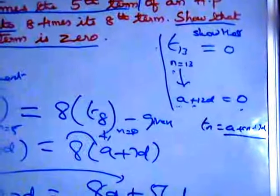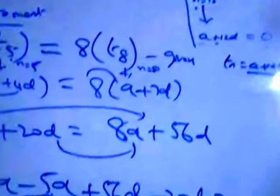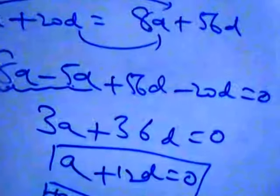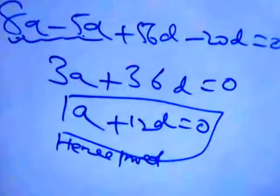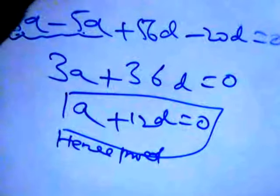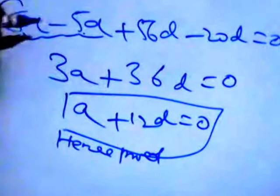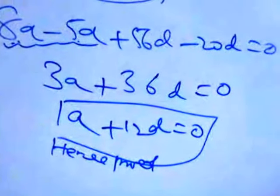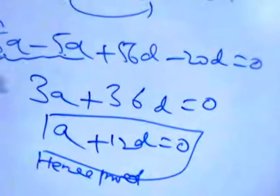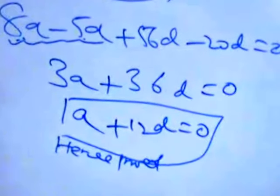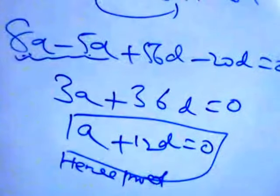This is a very simple sum. From a given statement we have to prove something — write what you have to prove separately, and from the given statement derive it — it's proved. We will do some more models.